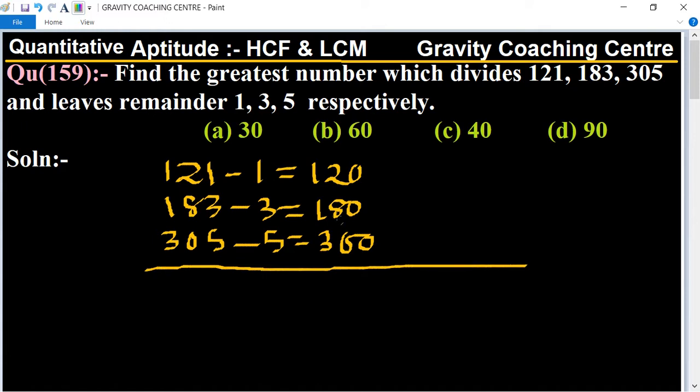Now we find the HCF of these numbers. First, all three numbers are divisible by 30, so we have 30 as a common factor, leaving 4, 6, and 10.